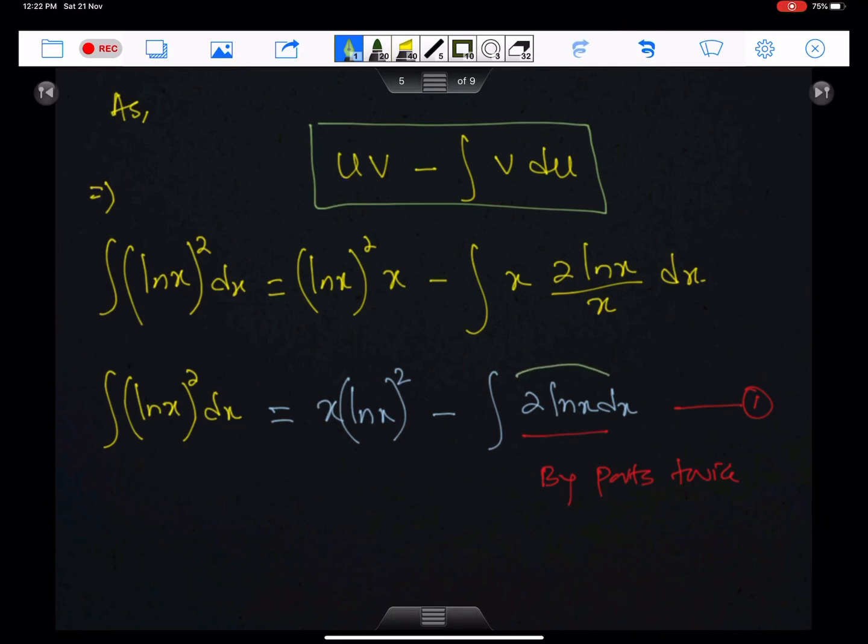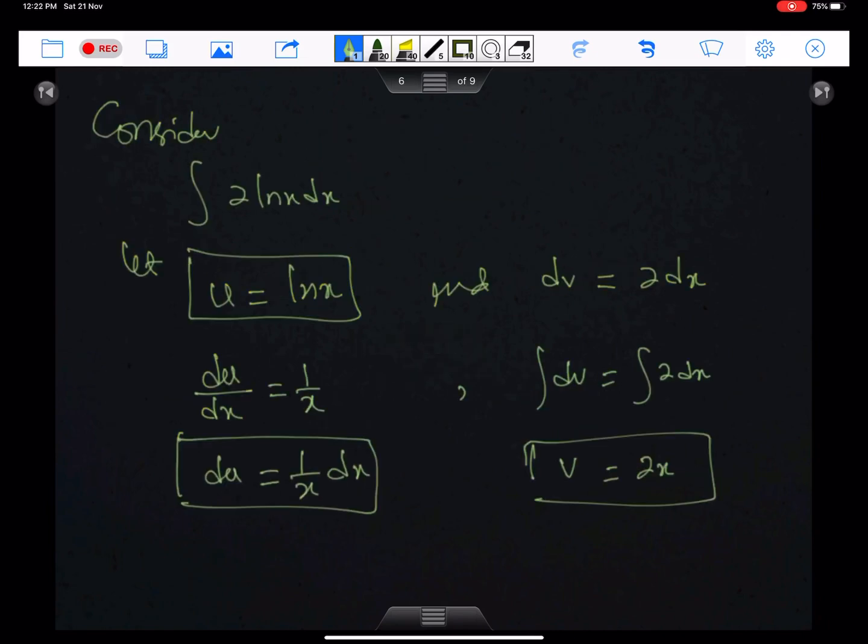Now see, again we have to use by-parts here. Now let's consider this integral. You can consider this integral with negative sign and this will make the calculation simple. This is u, ln x is u, and dv is 2 dx. So the simplified form of du is 1 upon x dx and the simplified form of v is 2x.